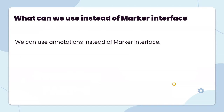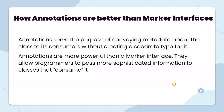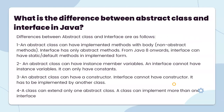What can we use instead of a marker interface? We can use annotations instead of a marker interface. How are annotations better than a marker interface? Annotations serve the purpose of conveying metadata about a class to a consumer without creating a separate type for it. Annotations are more powerful than marker interfaces because they allow programmers to pass more detailed information to the classes that consume it.